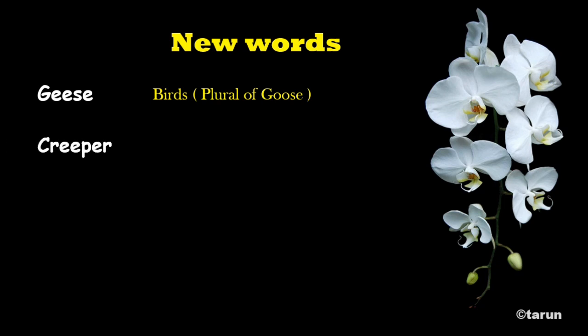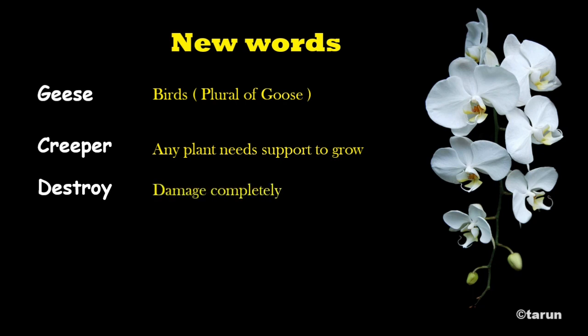Next one is C-R-E-E-P-E-R. It is 'creeper.' A creeper is a kind of plant that needs support to grow. Next one is D-E-S-T-R-O-Y. It is 'destroy.' Destroy means damaged completely — we have to damage it. That is destroy.